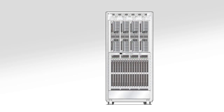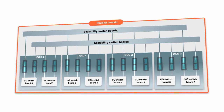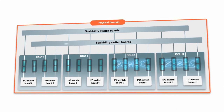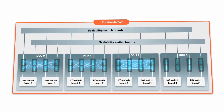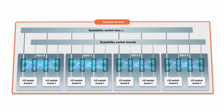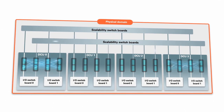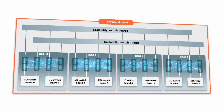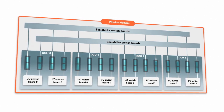Located at the front of the server, the scalability switchboards provide the capability to combine DCUs into larger physical domains. The scalability switchboards provide a global interconnect that joins all of the processors together and enables them to communicate with each other. This global interconnect enables you to configure the server into a single symmetric multiprocessor system containing up to 32 processors and up to 32 terabytes of shared system memory.